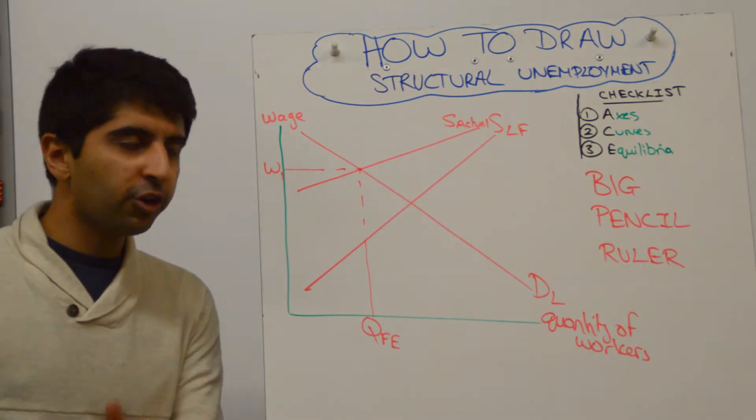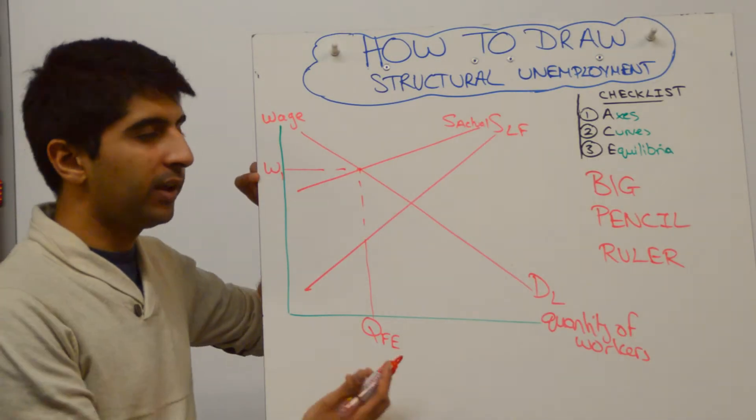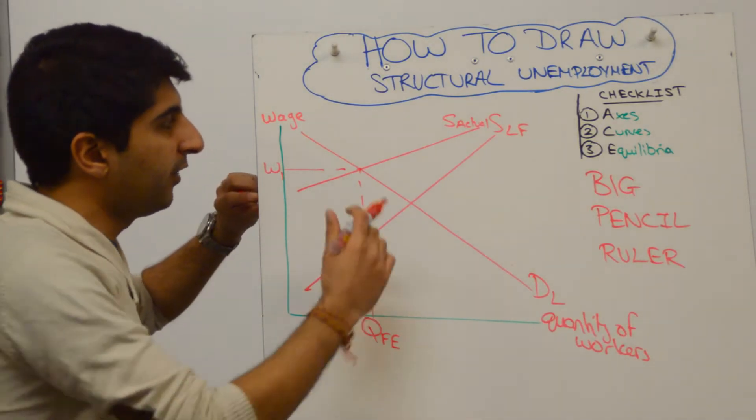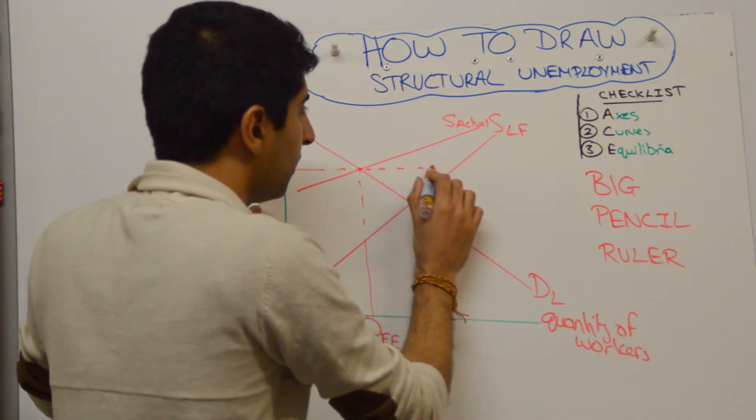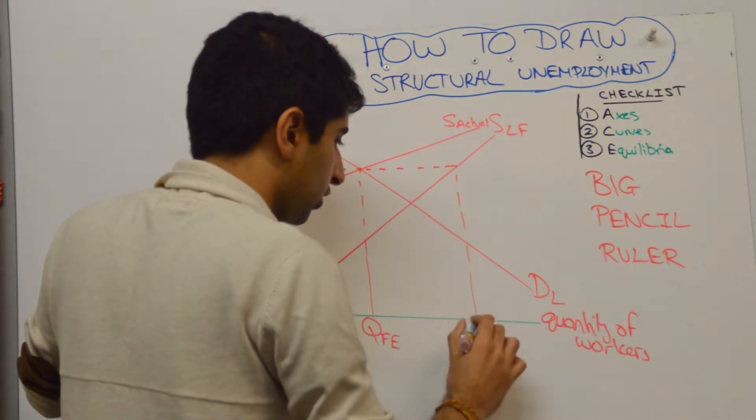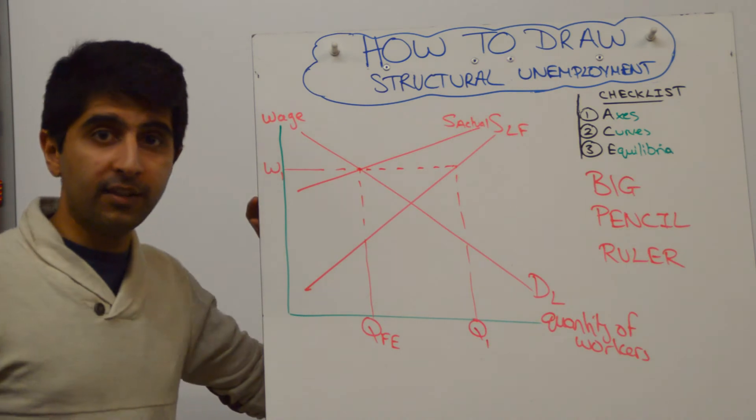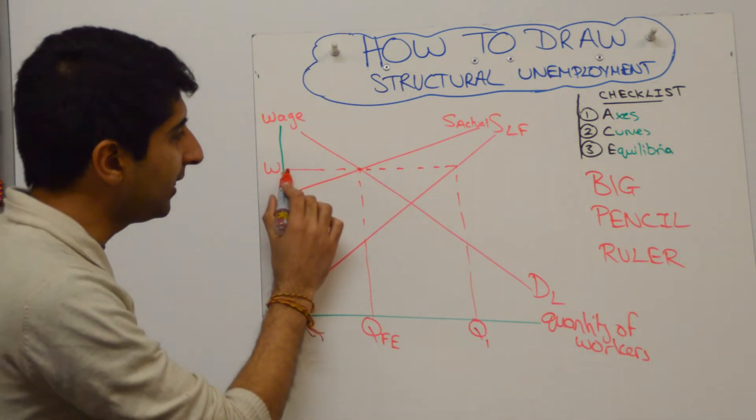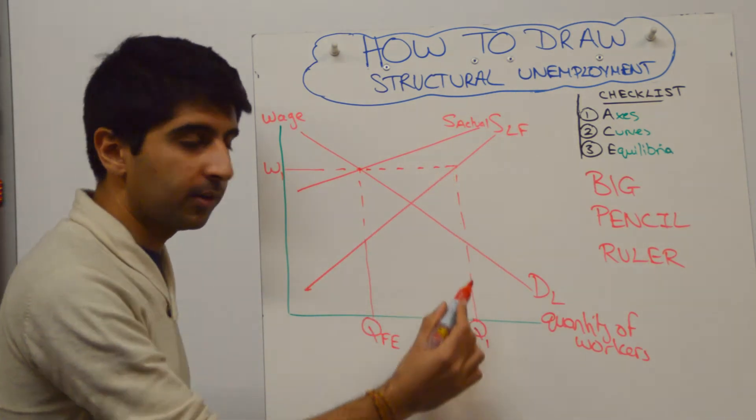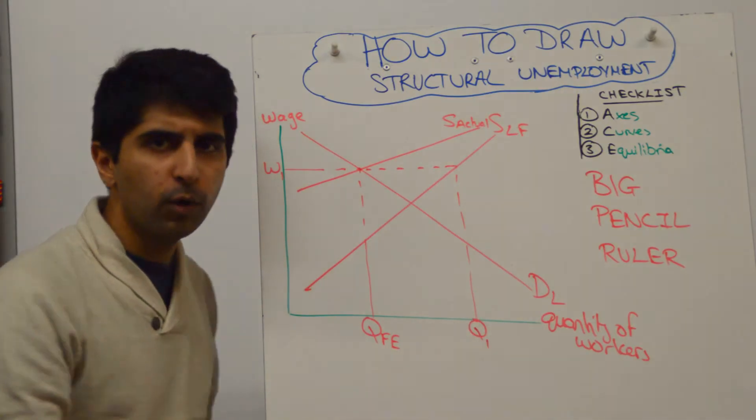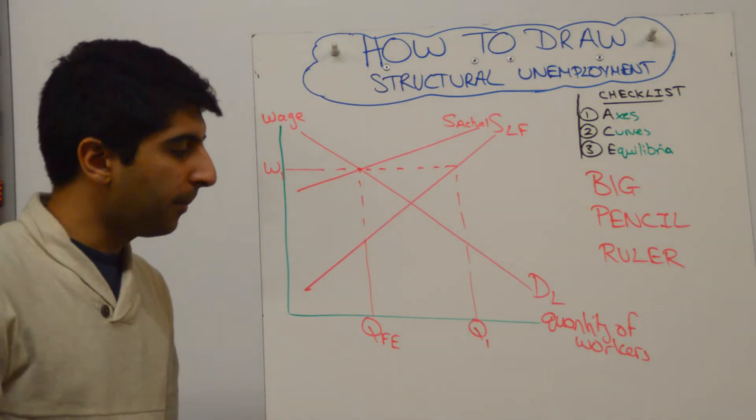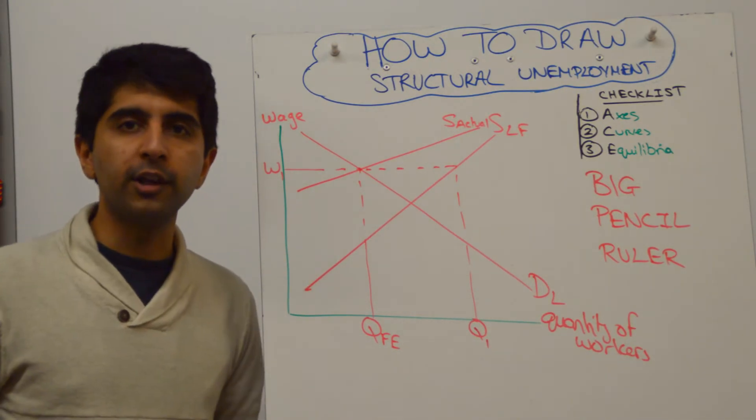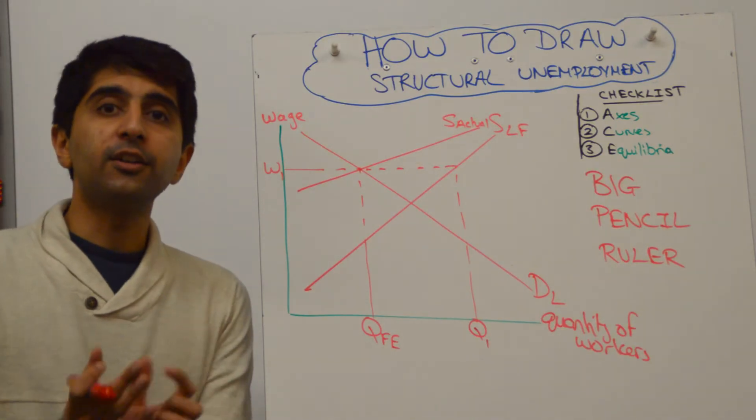And what you're trying to show is, look, at W1, we have the full employment level of output, but there should be Q1 workers taking the job. So take that wage rate across to the labour force supply curve, and you'll see that Q1 workers should be taking the job, but there is a distance between Q1 and QFE, workers that don't take the job.